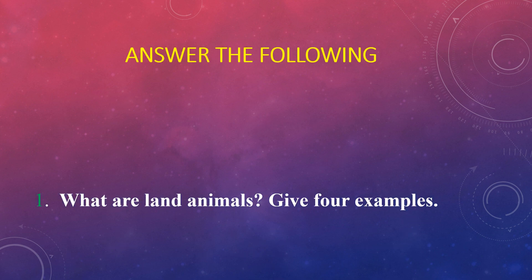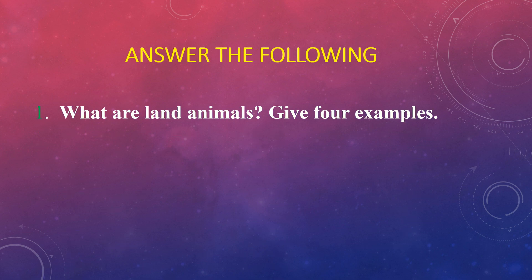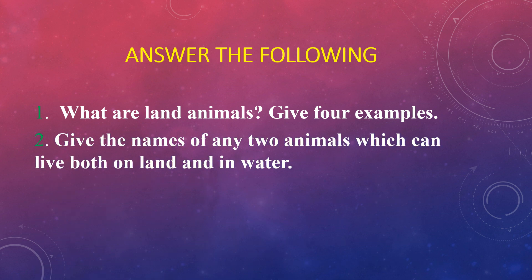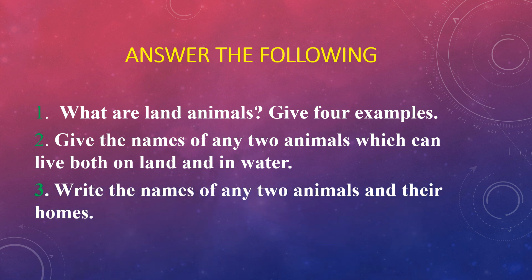I hope that all of you have understood what are land animals, water animals, and animals and their homes. Now it's question time. First question: what are land animals? Give four examples. Second question: give the names of any two animals which can live both on land and in water. Third and last question: write the names of any two animals and their homes.